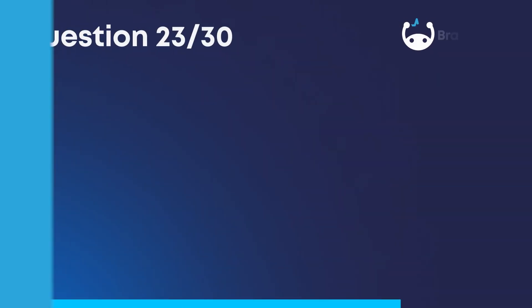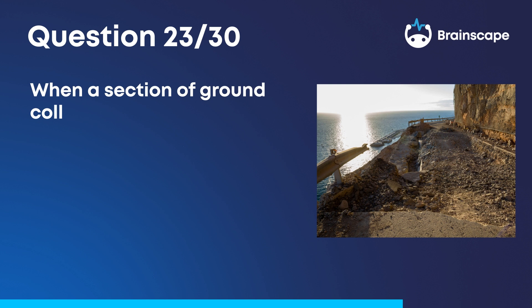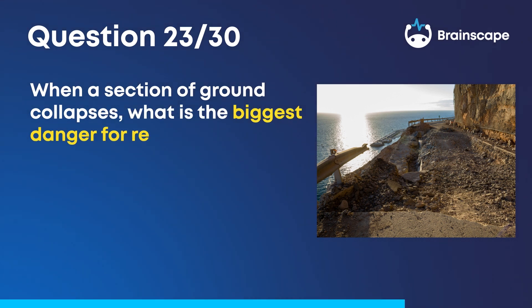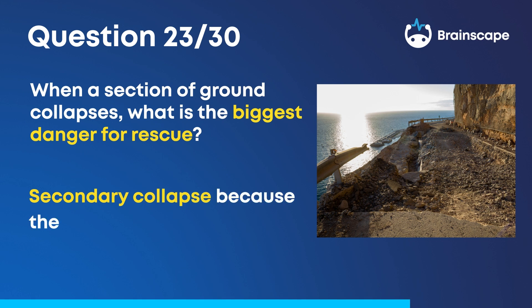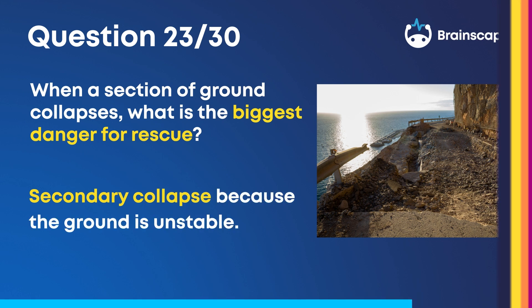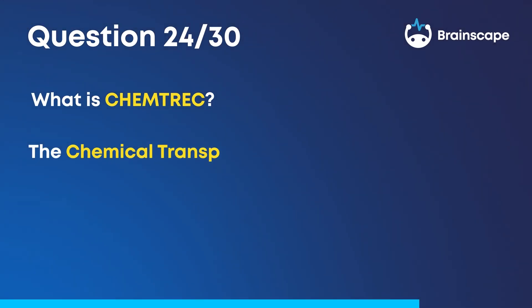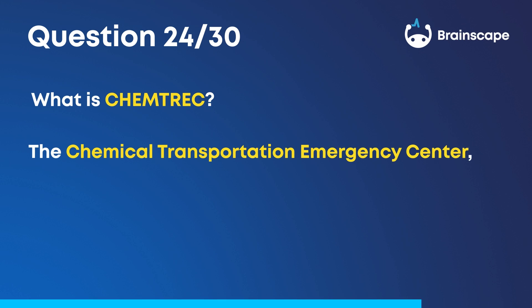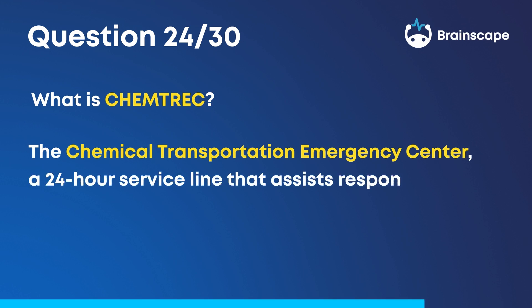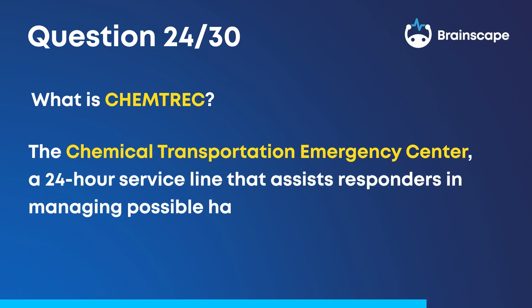Question 23. When a section of ground collapses, what is the biggest danger for rescue? Secondary collapse, because the ground is unstable. Question 24. What is ChemTREC? ChemTREC stands for the Chemical Transportation Emergency Center, which is a 24-hour service line that assists responders in managing possible hazards.